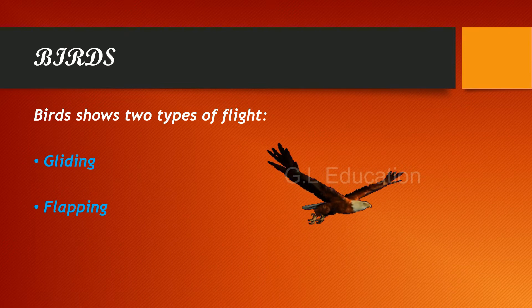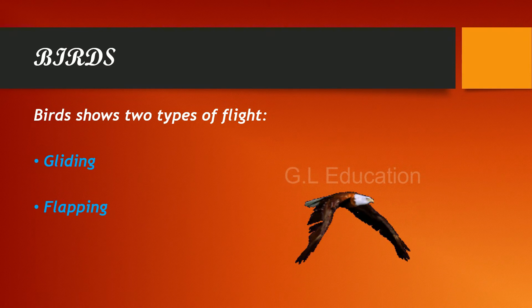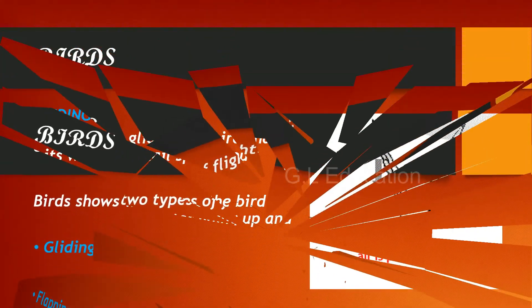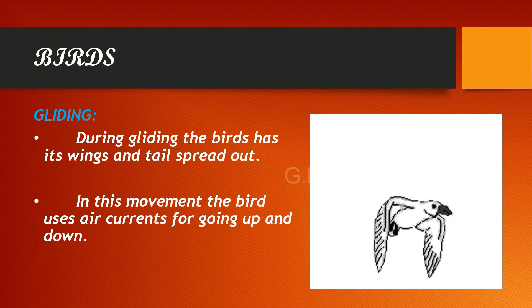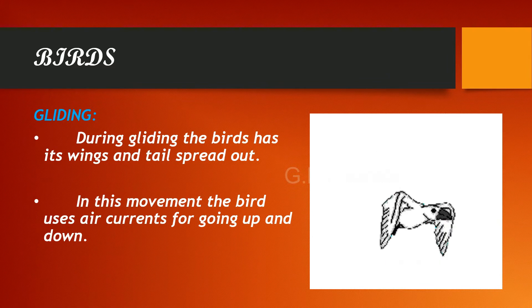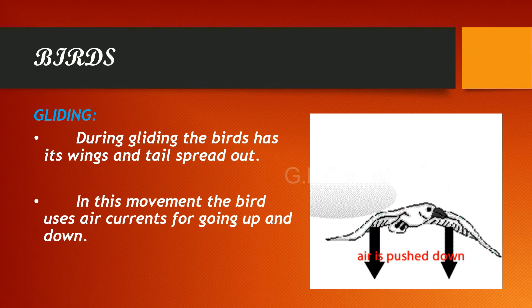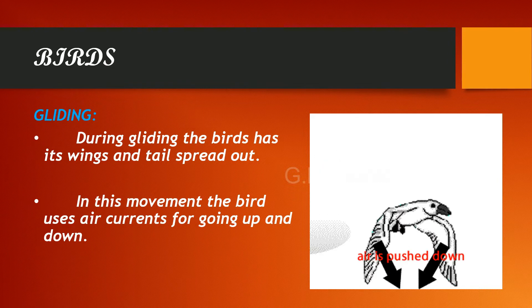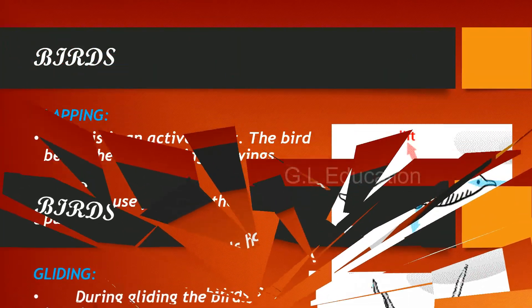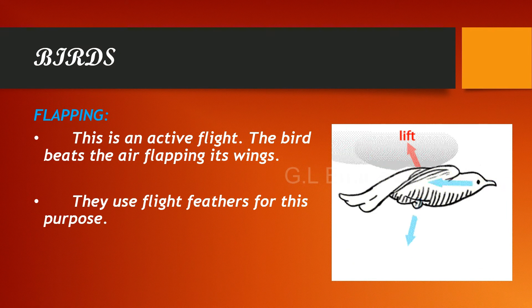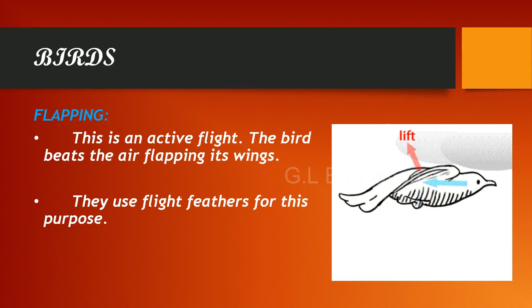Birds show two types of flight: gliding and flapping. During gliding, the bird has its wings and tail spread out and uses air currents for going up and down. Flapping is an active flight where the bird beats the air by flapping its wings, using flight feathers for this purpose.